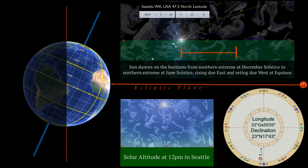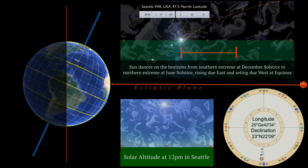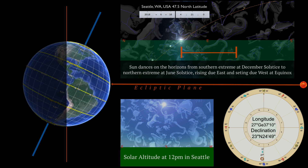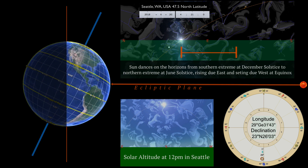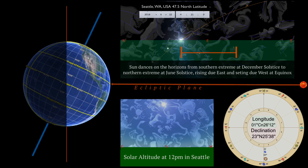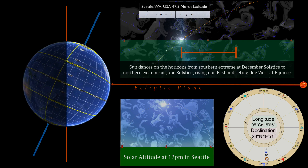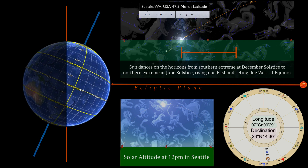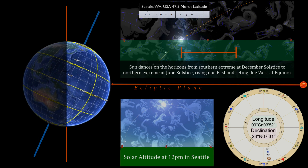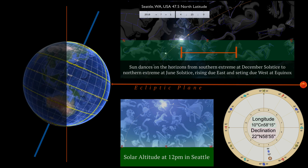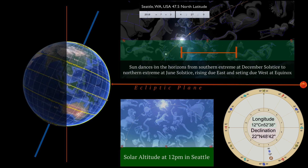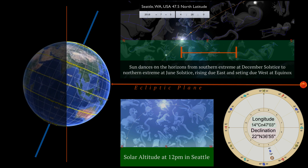This south-to-north movement between December solstice and June solstice occurs everywhere on Earth, for both sunrise on the eastern horizon and sunset on the western horizon.